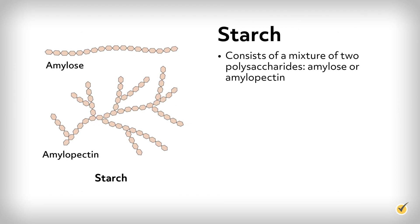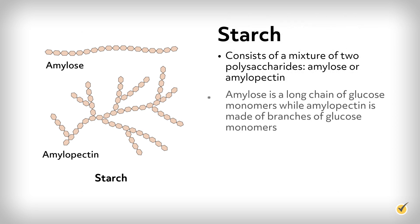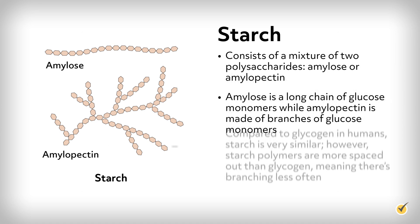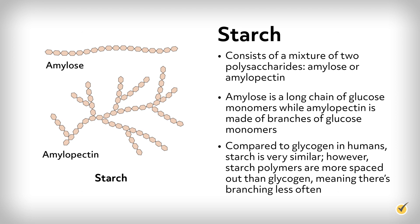Plants, on the other hand, store their glucose in the form of starch. Starch consists of a mixture of two polysaccharides: amylose or amylopectin. Amylose is a long chain of glucose monomers, while amylopectin is made of branches of glucose monomers. Compared to glycogen in humans, starch is very similar. However, starch polymers are more spaced out than glycogen, meaning there is branching less often.